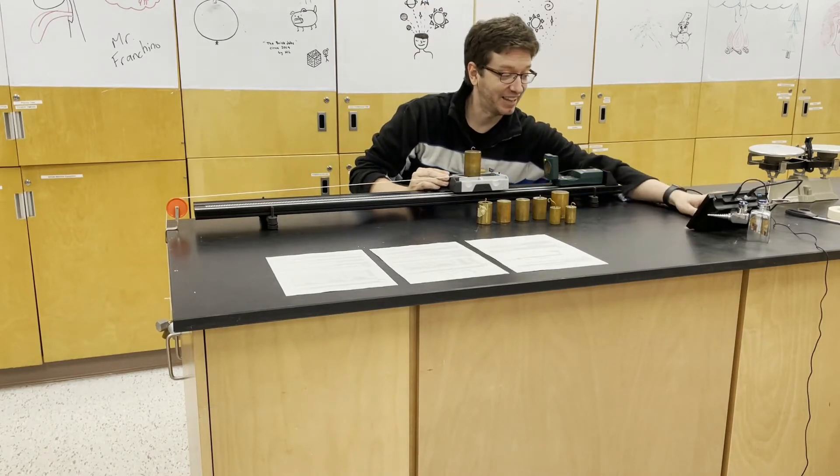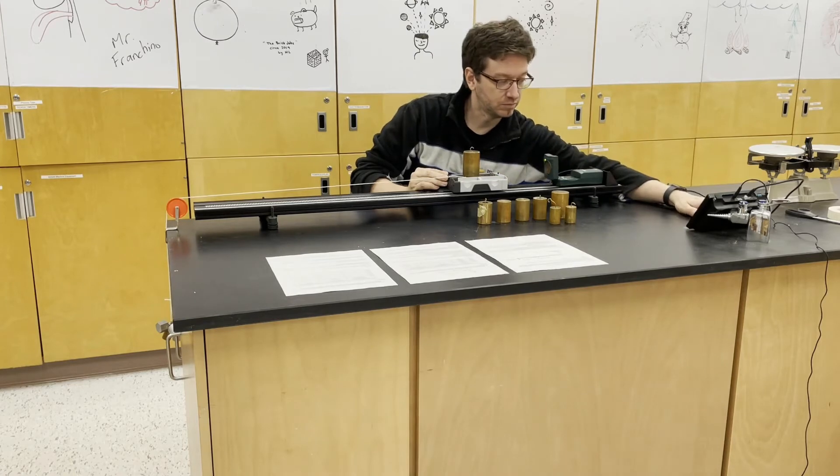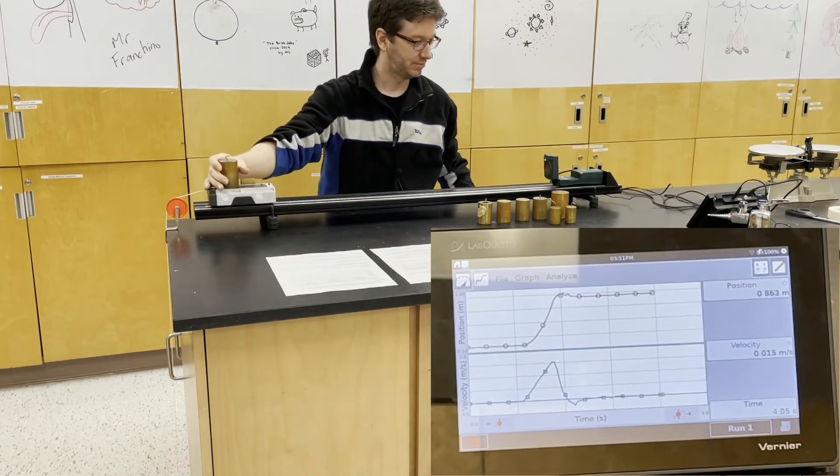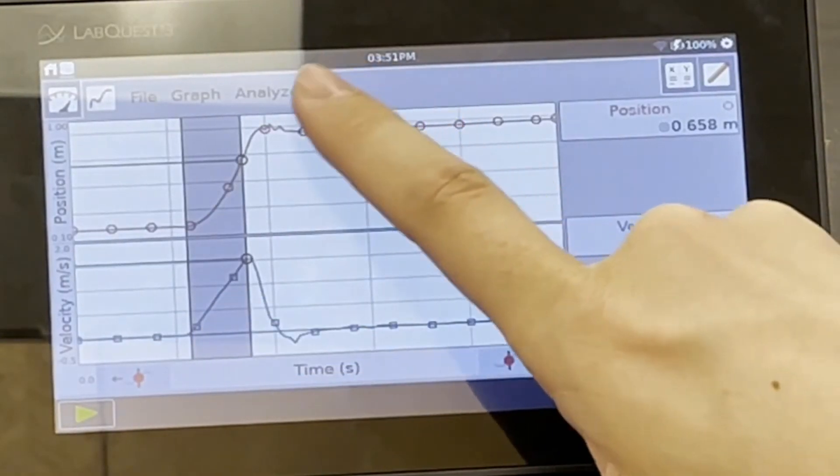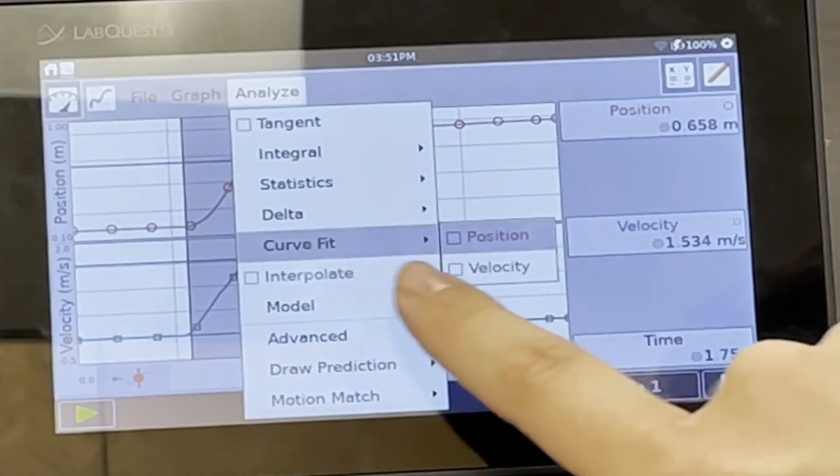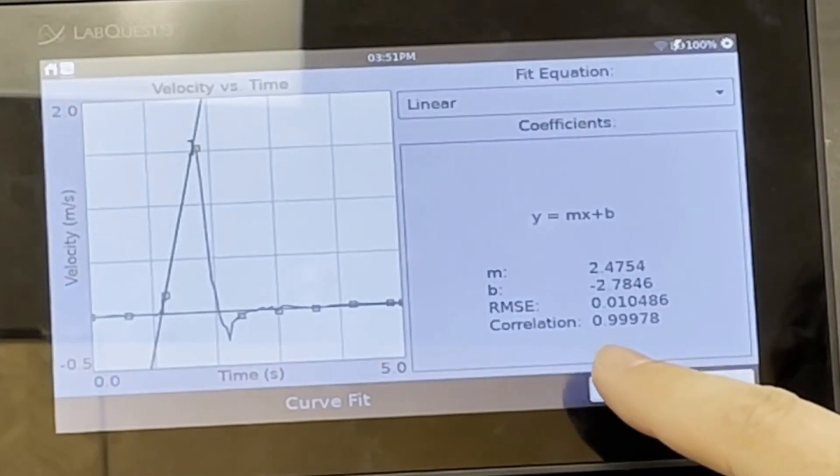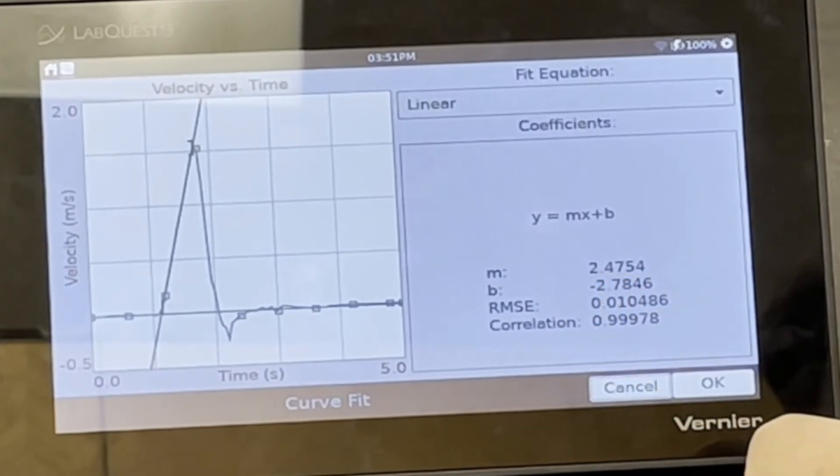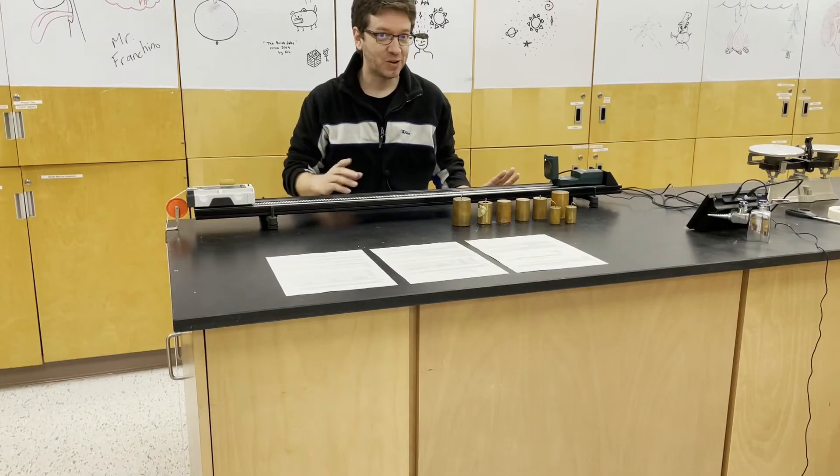And finally, 500 grams on the hanging mass. So now our acceleration is 2.4754 meters per second squared. Alright, so that's it for part one.